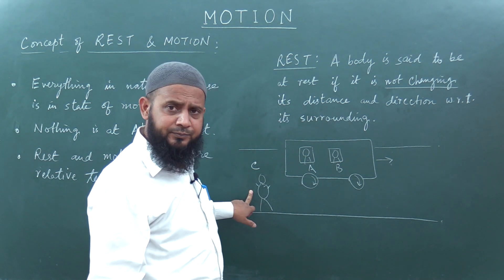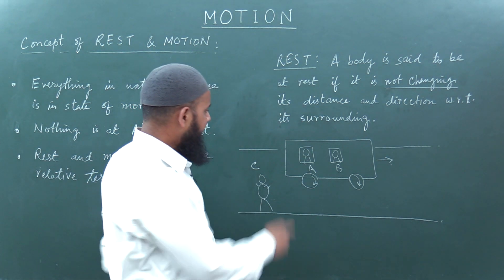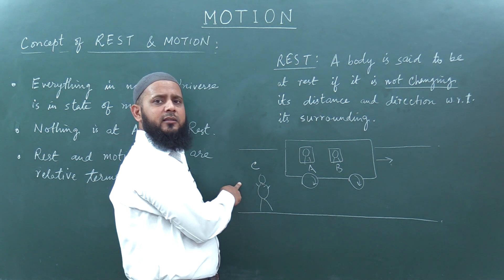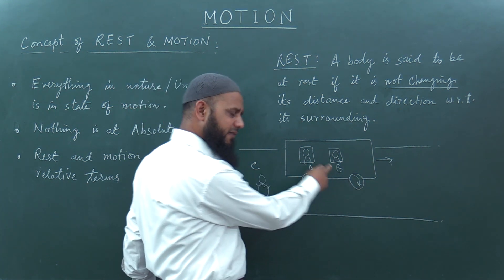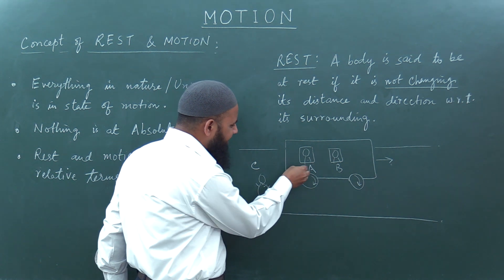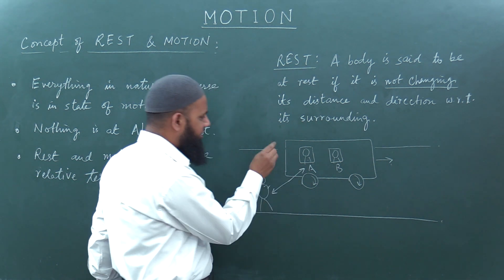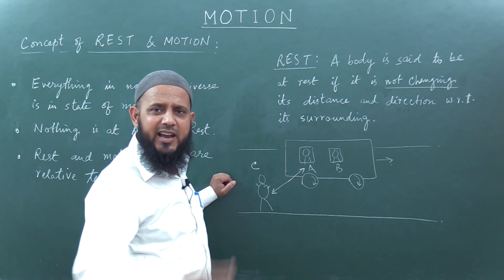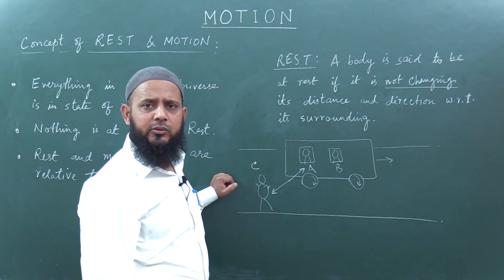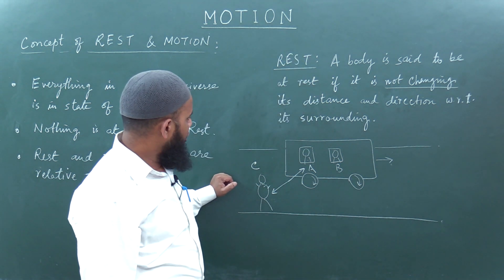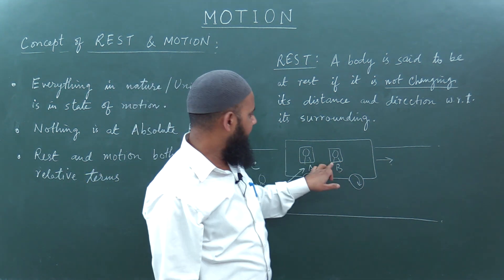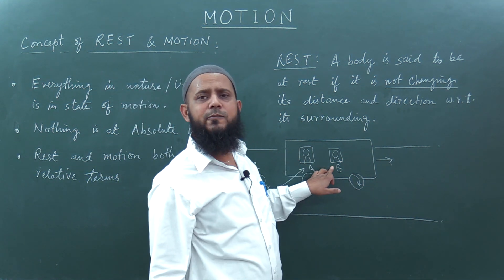What about C? A is in motion with respect to C, and B is in motion with respect to C. Why? Because the distance between A and C is continuously changing as the bus is moving. So A is in motion with respect to C, but A is at rest with respect to B.